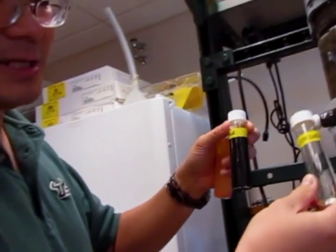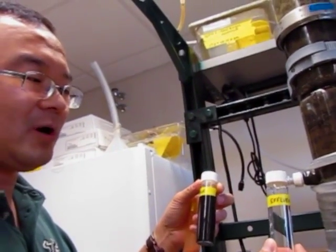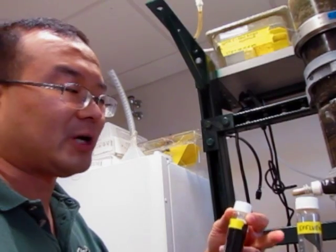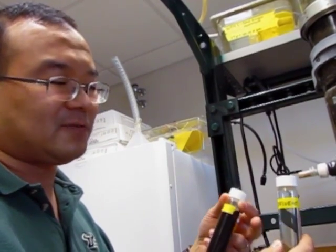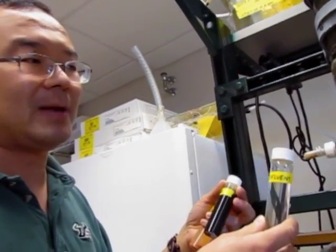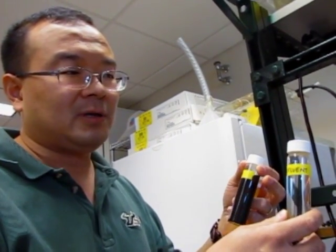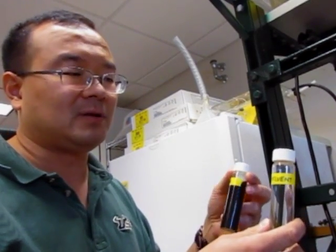So after the membrane, what we basically get is what looks like clean water. If we were to process this further, we could drink this, but we're not going to do that because there's no need to. What we're going to use this for is agricultural applications where this clean water now is pathogen-free because it's gone through the membrane. But it has nutrients in it—ammonium and phosphate—and we're going to test its ability to grow plants.